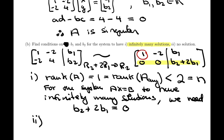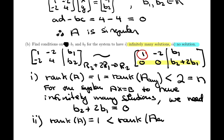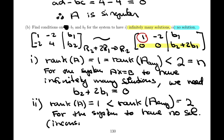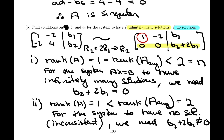For no solutions — an inconsistent system — we need the rank of A, which is 1, to be less than the rank of the augmented matrix, meaning the rank of the augmented matrix must be 2. That happens when B2 plus 2B1 is non-zero. So the condition for infinitely many solutions is B2 plus 2B1 equals 0, and the condition for no solution is B2 plus 2B1 not equal to 0. These exhaust all possibilities.